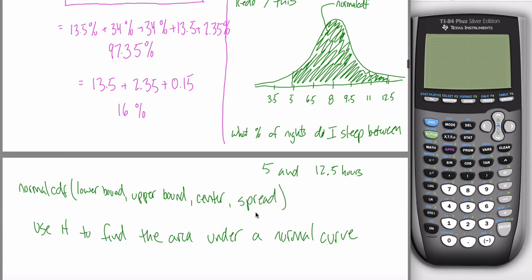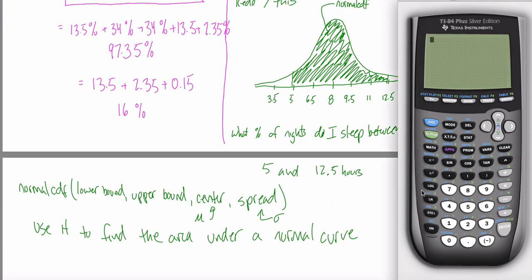In this section, the center will always be mu — the population mean, which is eight in this case — and the spread will be sigma, the population standard deviation, which is one and a half. I don't write mu and sigma as those two arguments because later in the class it won't be mu and sigma; it'll be other things representing center and spread. So write it as: lower bound, upper bound, center, spread — trust me.